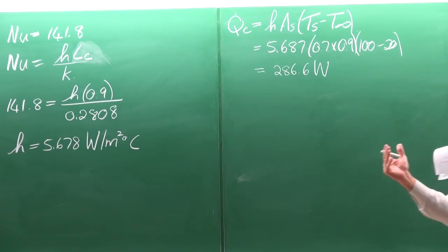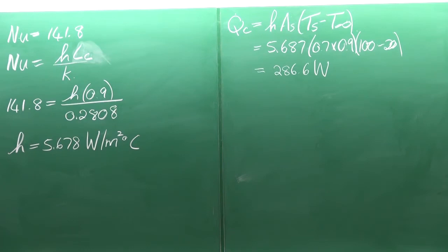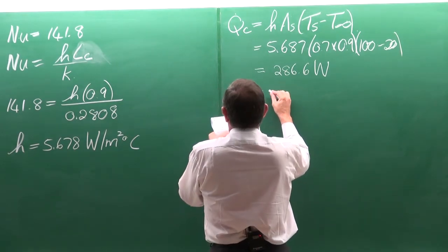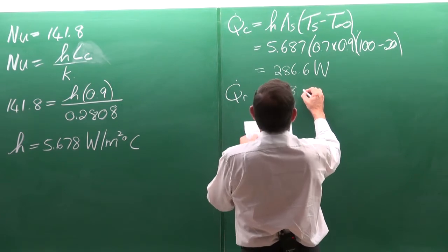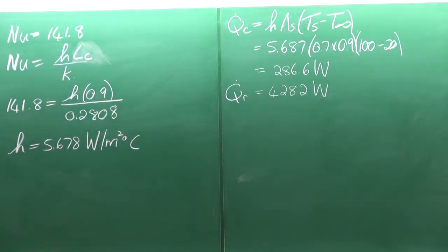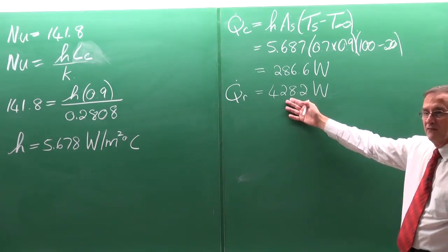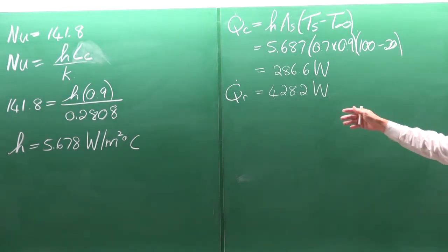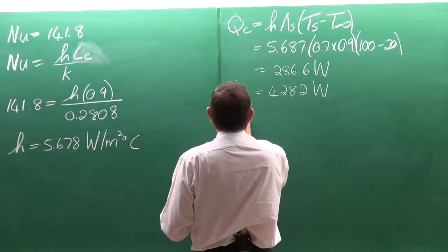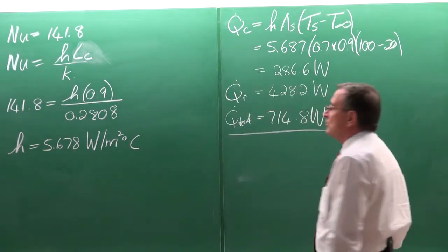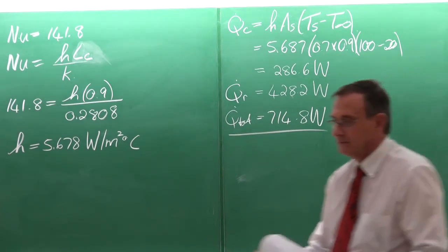As mentioned with the previous problem, radiation normally plays a big role in natural convection. If you calculate the radiation heat transfer using ε = 1, it works out to approximately 428.2 W — almost double that of the natural convection. Even at ε = 0.5 it would be over 200 W, so the total heat transfer rate for the vertical plate is 286.6 + 428.2 = 714.8 W.